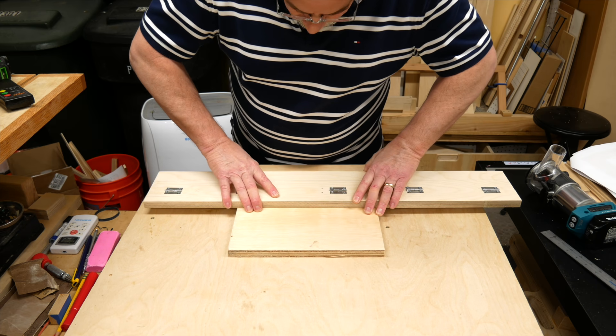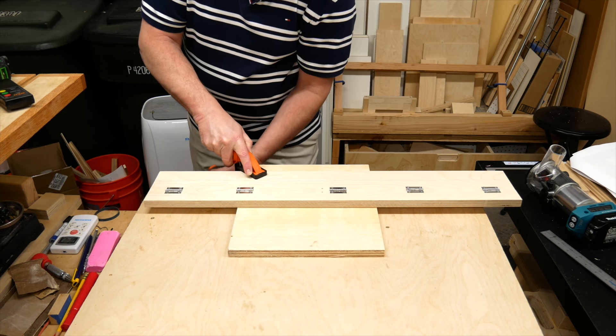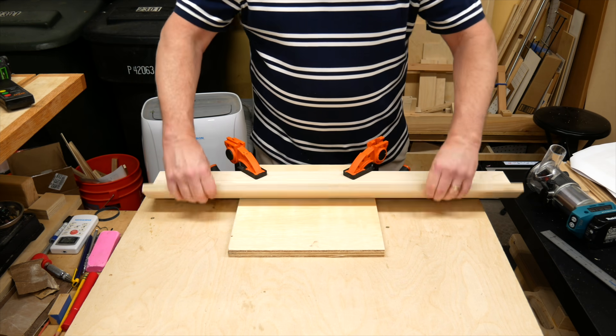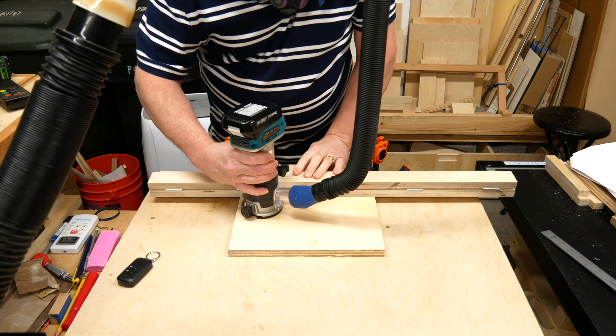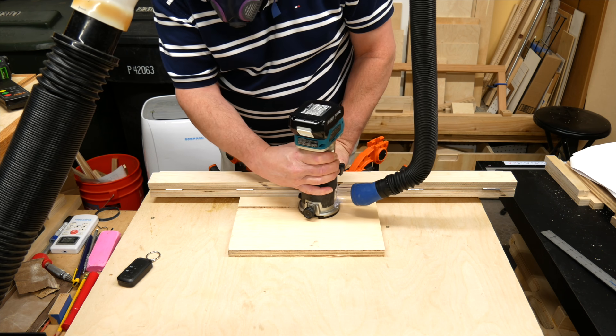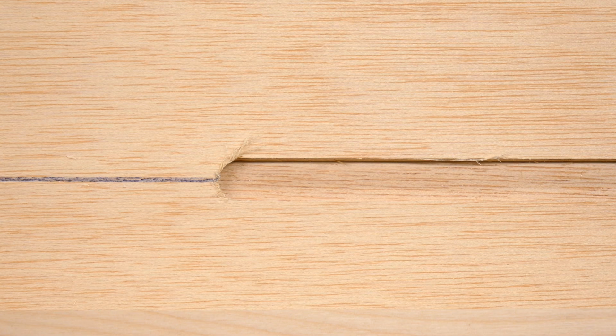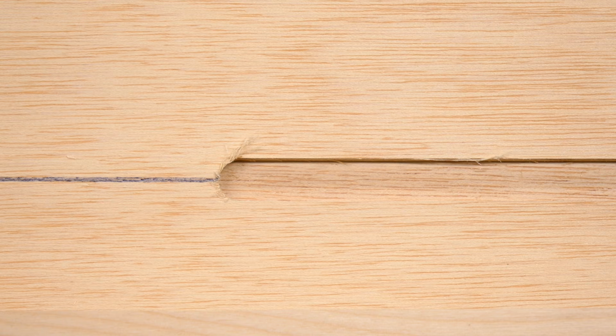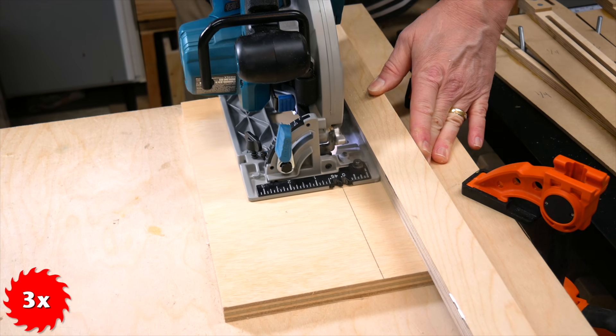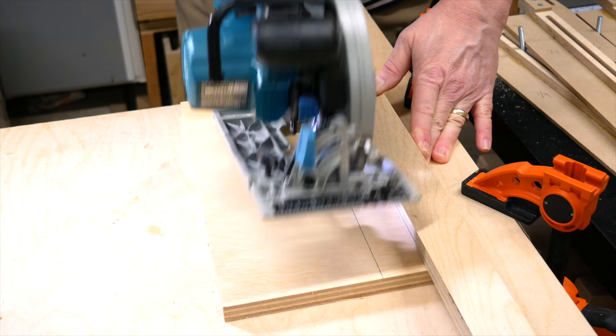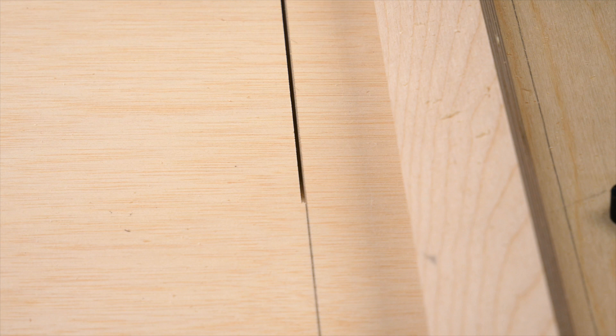To use the jig with the router, line up the edge on the center line and clamp it down. Fold the spacer back and make your cut. It doesn't matter what size bit you use, since you're always cutting right in the middle of the center line. For a circular saw, you do basically the same thing. But pay attention to which side of the line you should be cutting on.